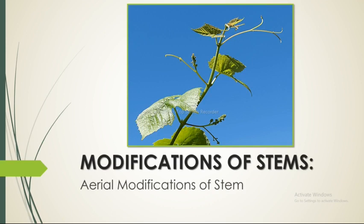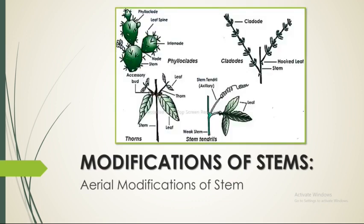The aerial modifications of the stem are further divided into four types. First is the phylloclade, which includes the phylloclade, leaf spine, internode, node, and stem. Second type is the cladode, which includes the cladode, hooked leaf, and stem. Third type is thorns, which includes the accessory bud, leaf, thorn, stem and leaf. The fourth type is the stem tendrils, which includes the stem tendril, axillary leaf, and weak stem.